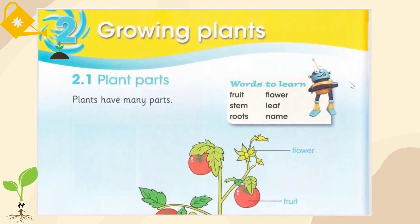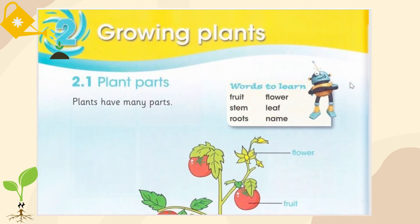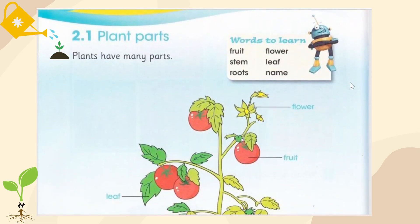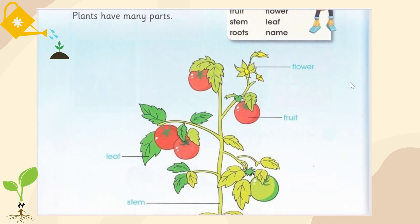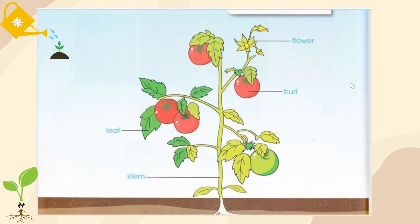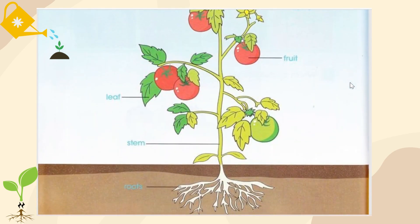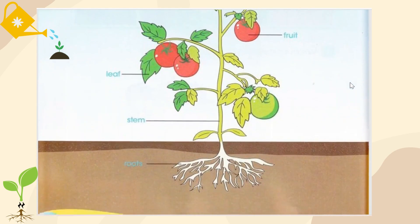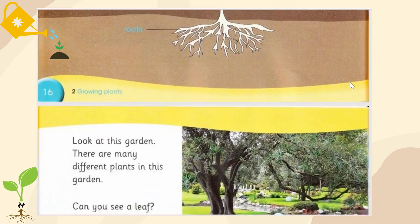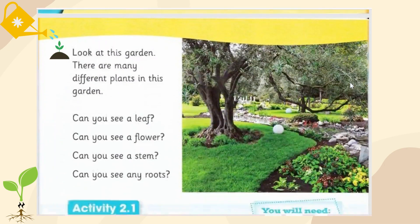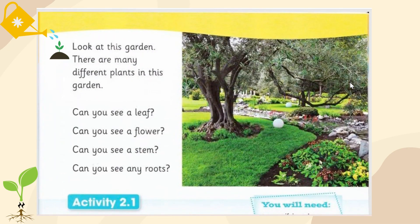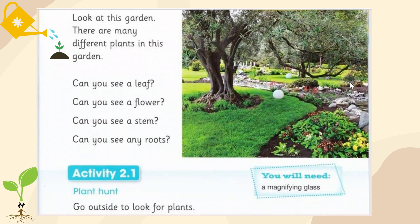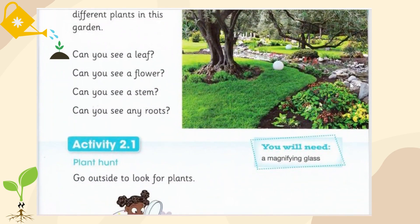In Lesson 5, we talked about the plant — how many parts the plant has and what the parts are: flower, fruit, leaf, stem, and roots. Then I asked you to go into your garden or anywhere and identify the plants and their parts.